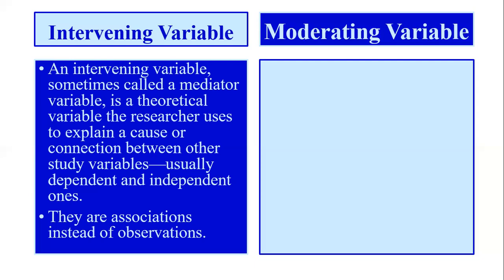The intervening variable explains how it should cause the relationship between the other two variables through association. One important thing to keep in mind: we apply an intervening variable in our research when a strong relationship exists between the independent and dependent variable. If there is no strong relationship between them, we cannot go for mediation analysis. If a very weak relationship exists and the literature also supports that the two variables have a weak relationship, we cannot include a mediating variable.